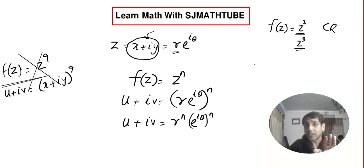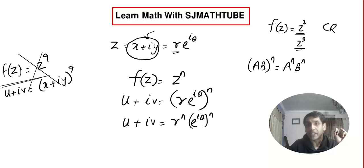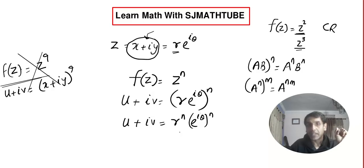In case you are confused: (ab)^n = a^n · b^n, and (a^n)^m = a^(nm). So eventually I am going to get u + iv = r^n · e^(inθ).